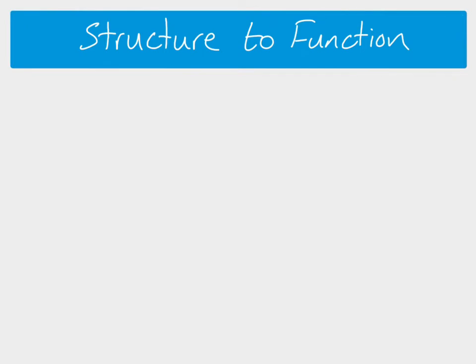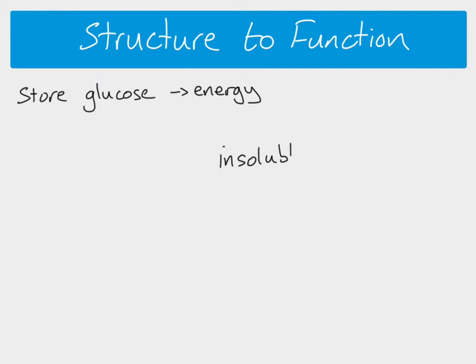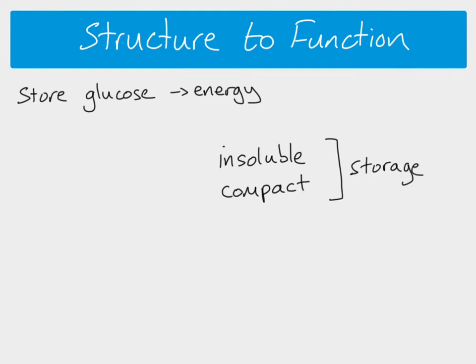Now let's think about structure and function. The function of starch is to store glucose so that energy can be released at a later date. The starch molecules - meaning amylose and amylopectin together - achieve this in several ways. Starch is insoluble and compact, both of which make it good for storage. It's also easy to hydrolyze glucose because you've got lots of glucose molecules at the end of the chains, which is important for releasing energy.